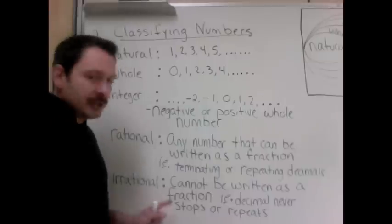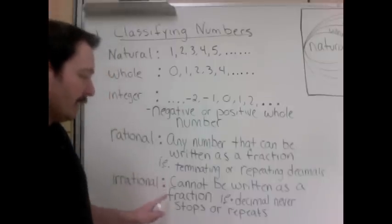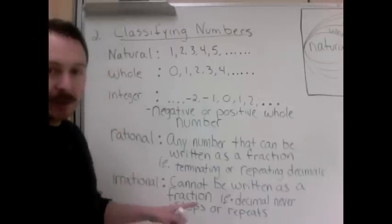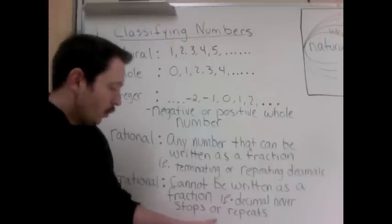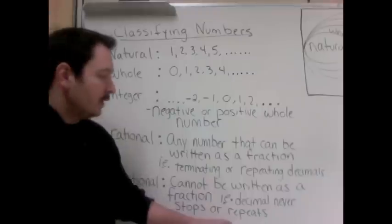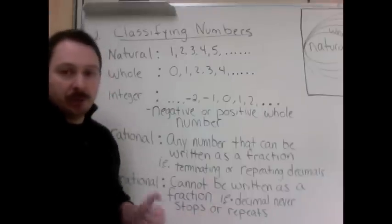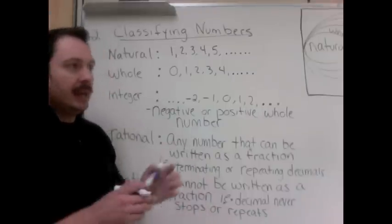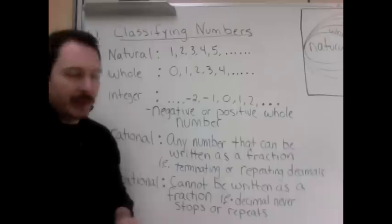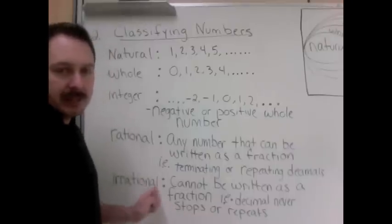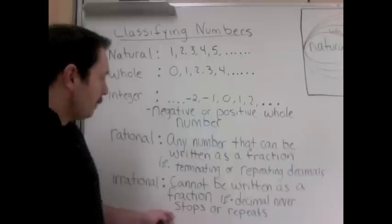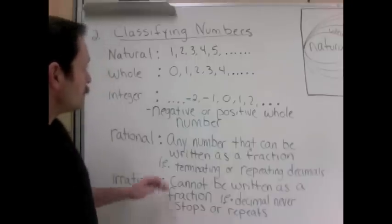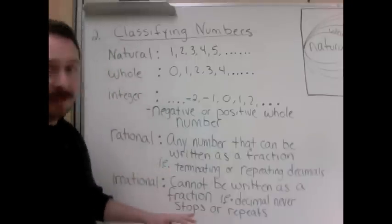Irrational is everything left over. It cannot be written as a fraction. It's a decimal that never stops or never repeats. For example, the number pi, 3.1415926, it just keeps going and going. It is irrational because it never stops.